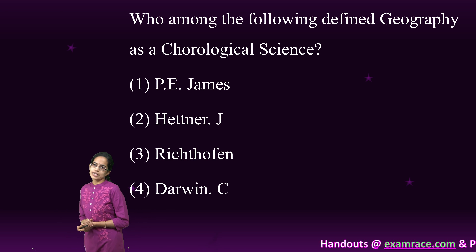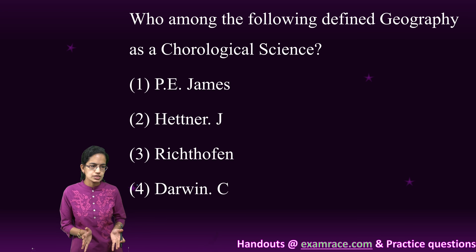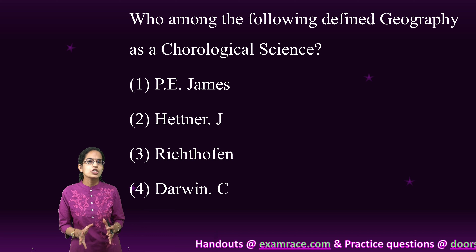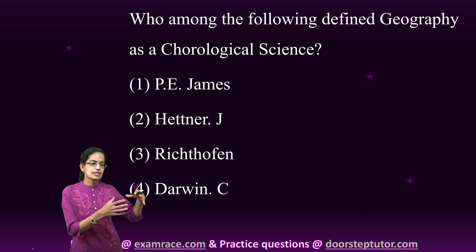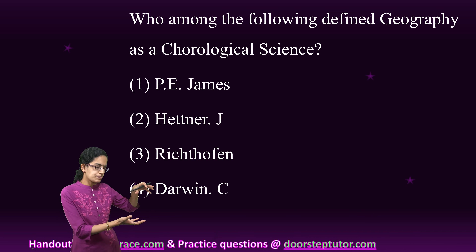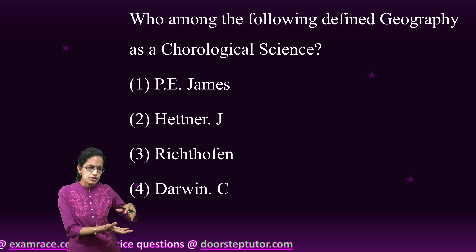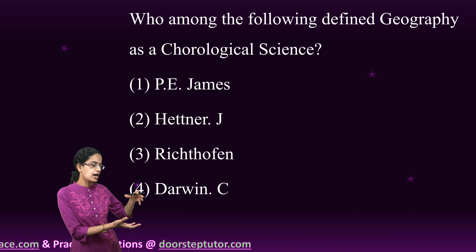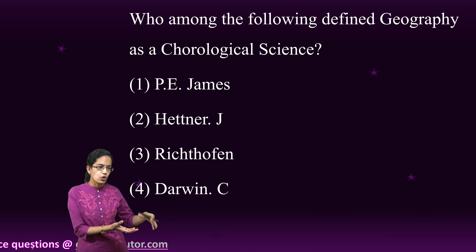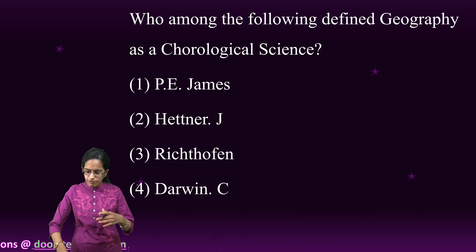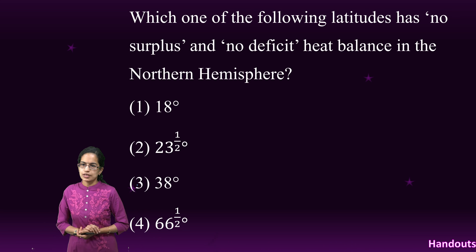Hettner explained geography as a chorological science. Chorology is the study of place and regions — it is an explanation of geographical phenomena occurring in a particular place or region with a focus on spatial distribution.